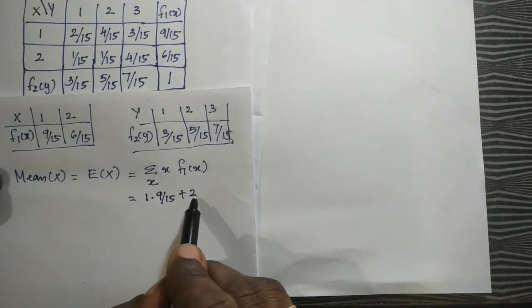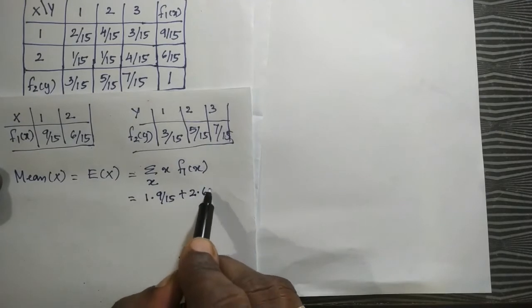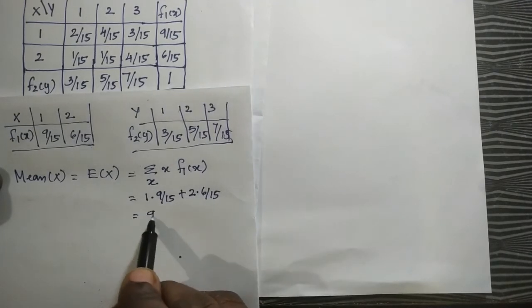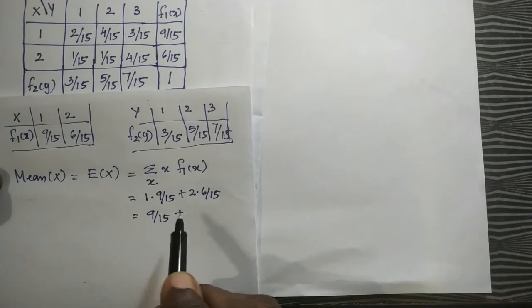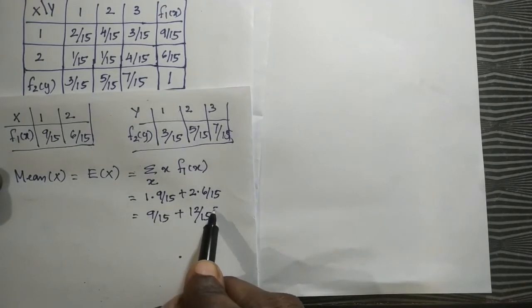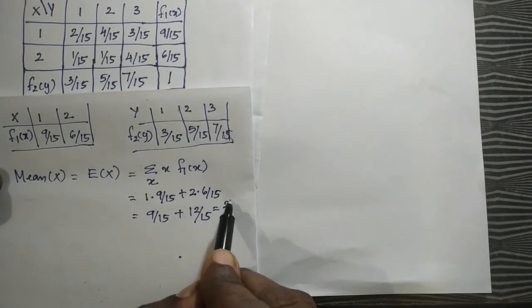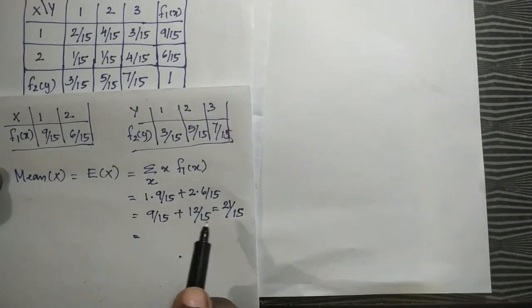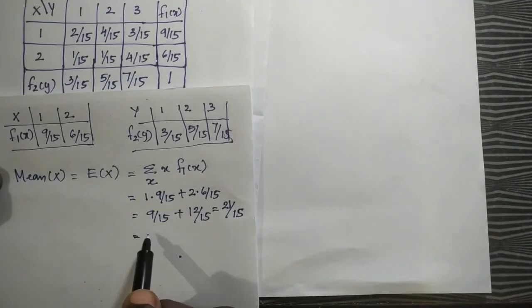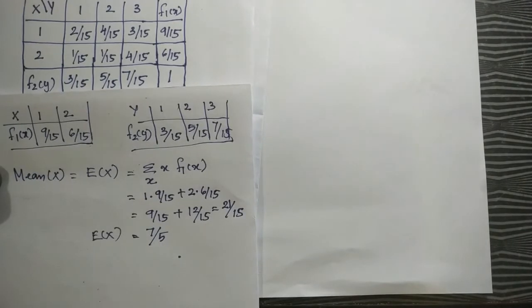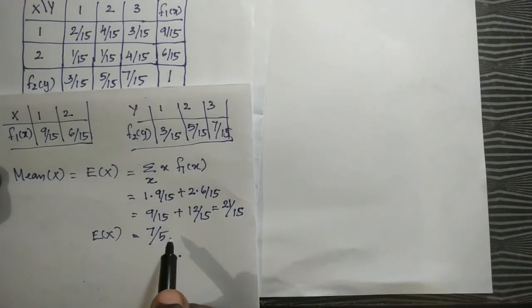2 times 6 by 15 equals 9 by 15 plus 12 by 15, equal to 21 by 15. Then 3 cancels, giving 7 by 5. The expectation of X is 7 by 5.